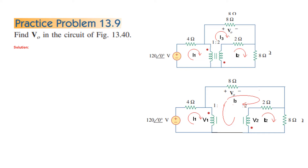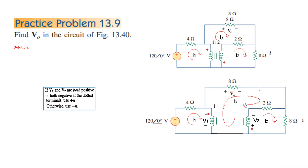Having marked all the currents, we will now mark the voltages — we will call this voltage V1 and this voltage V2. Then we will mark the polarity. It looks like a normal case with positive sign at the top and negative at the bottom. The reason we are taking it this way is: if V1 and V2 are both positive or both negative at the dotted terminal, then we have a positive relation. To make both positive at the dotted terminal, we mark it like this.